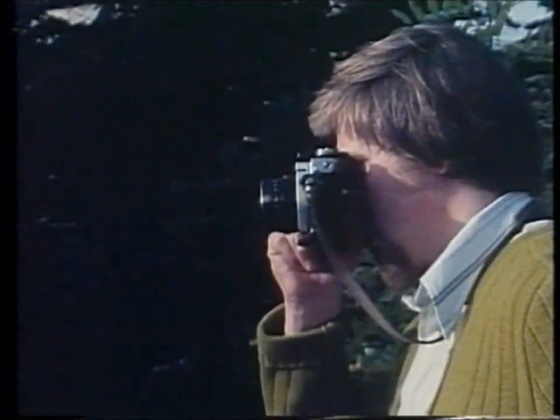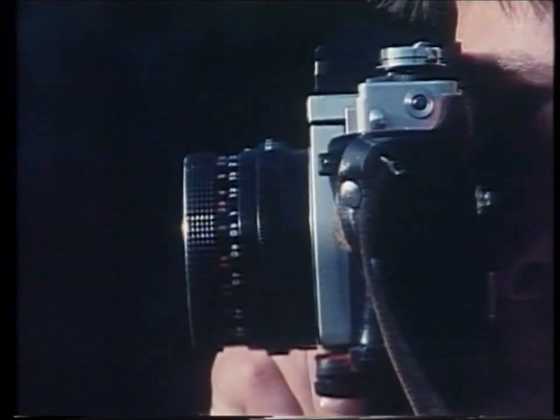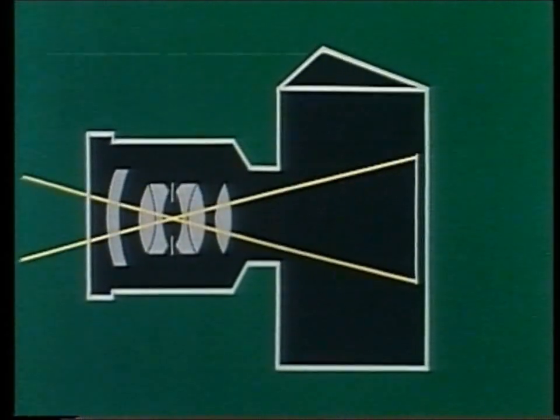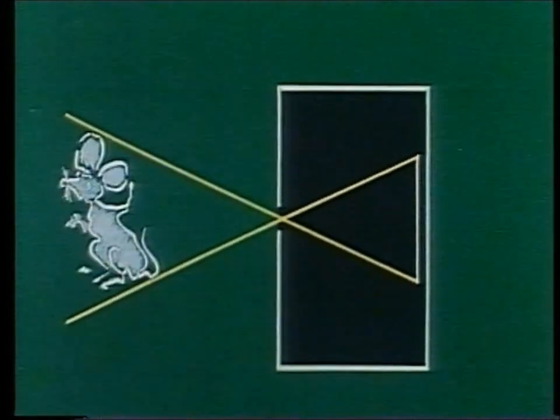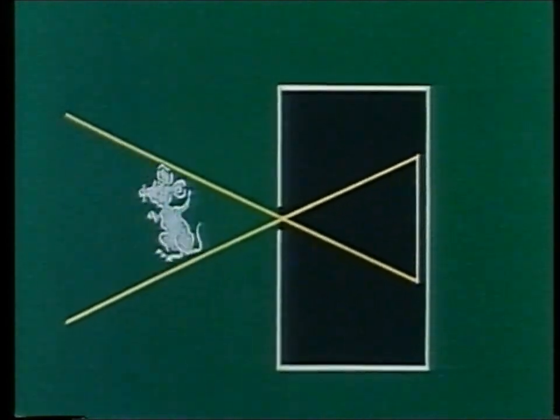For over a century now, we have been able to register images of objects through photography. But even in the most modern camera, pictures are produced as a geometric representation of a three-dimensional object on a plane, which was already known in ancient times. A flat photograph imitates the three-dimensionality of the object, better or worse, depending on the lighting of the object being photographed and the background.